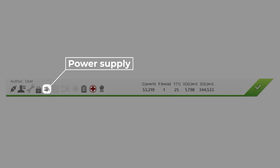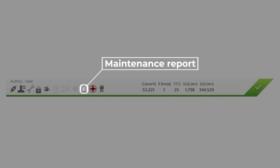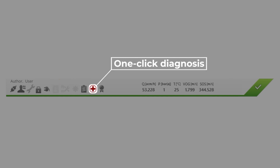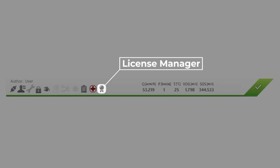The voltage supply icon shows the status of the device's voltage supply. When you click the report icon, Flowgate creates a maintenance report. You can also start a diagnostic session directly from this page by clicking the red cross icon next to the report icon. If you want to view the license, click on the license icon to open the license manager.